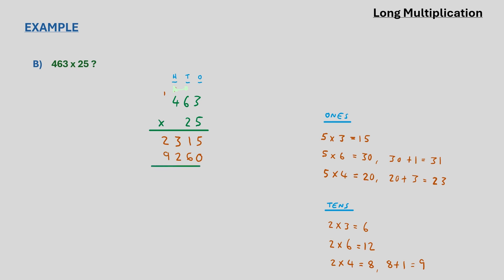So now that we have the result of the second multiplication, all that's left to do is to add them together, and we will have the answer to the original multiplication sum. So 463 multiplied by 25 is eleven thousand five hundred and seventy-five.